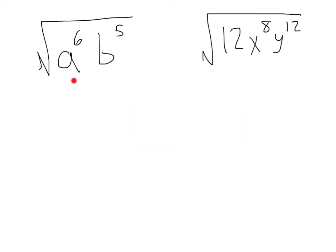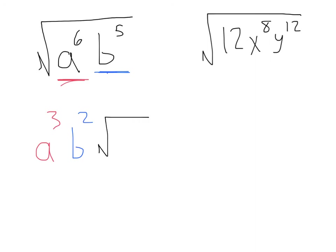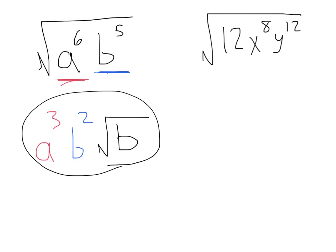Whenever you have more complex square roots, just take it one variable at a time. Here we have square root of a to the sixth times b to the fifth. Let's start with a to the sixth — two goes into six three times, leaving me with a cubed. Then we move on to b to the fifth. Two goes into five twice, giving b squared, with a remainder of one — so I'm going to have one b left over inside my square root. That's my answer, simplifying each one at a time.